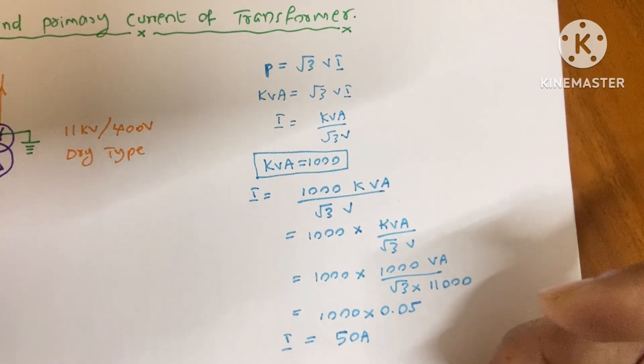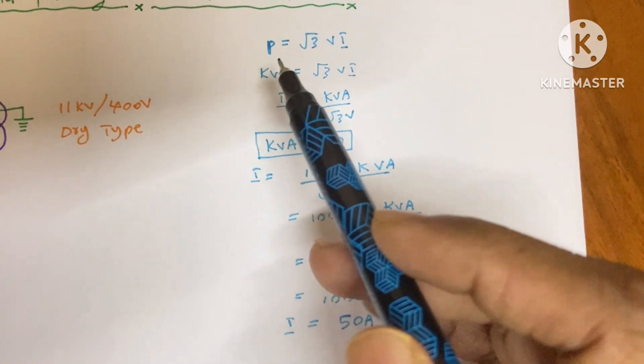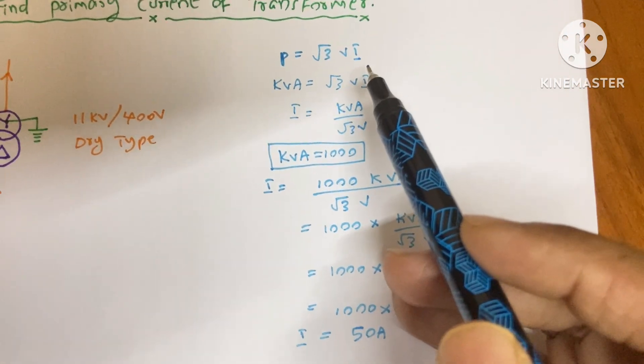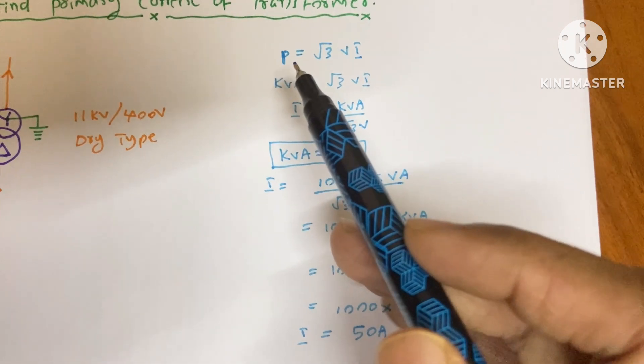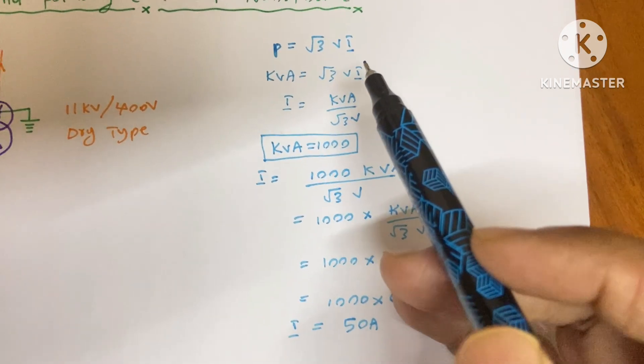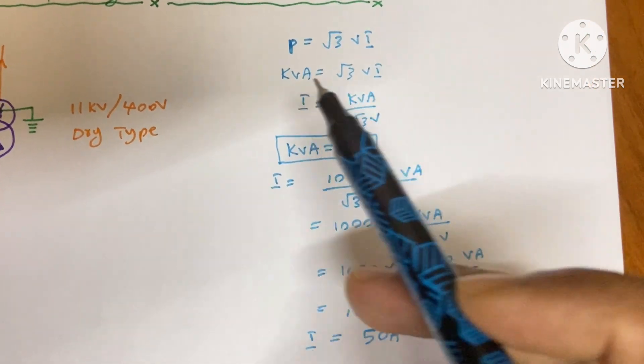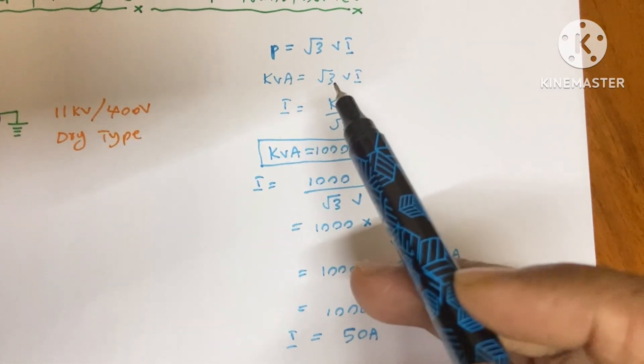To find out the current, I wrote the power equation: P is equal to root 3 into VI. Here our power is the kVA, so in this equation there is no need of cos theta, no need of power factor. That means our kVA is equal to root 3 into VI.